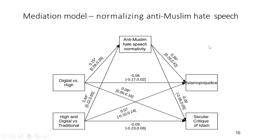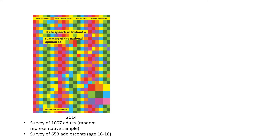In a more complex model, we found that people using more digital media rather than traditional media tend to consider hate speech as more normal — accepting it as something that should not be banned. This in turn makes them more prejudiced and more Islamophobic. So because of switching from traditional media to online media, we are becoming more accustomed to and normalizing prejudiced hate speech.